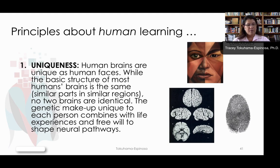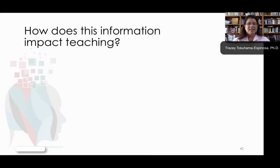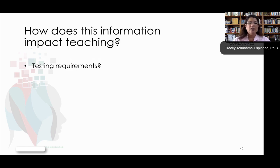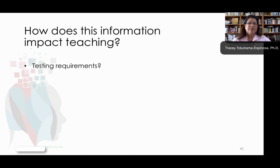So humans are unique. If we know that, and that is the truth — it can come out of the lab and be put into our classroom — then that makes us think: how does this impact teaching? What does this mean about testing requirements? When we think that all kids should be tested in the month of April, everybody who is seven years old — it doesn't matter if you just turned seven or if you've been seven for eleven and a half months — you need to have a certain ability. Is that fair? Is that really fair when we know that all people are quite unique?